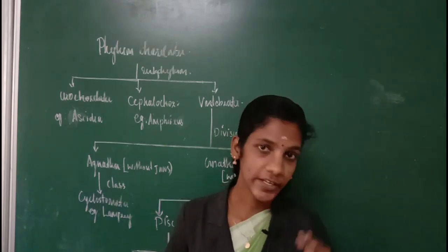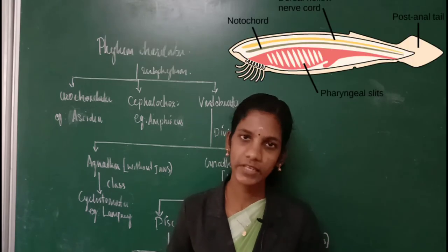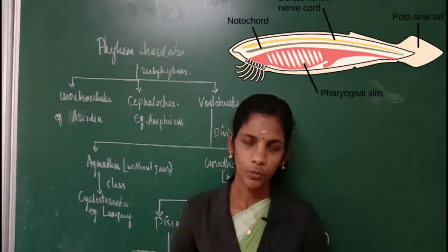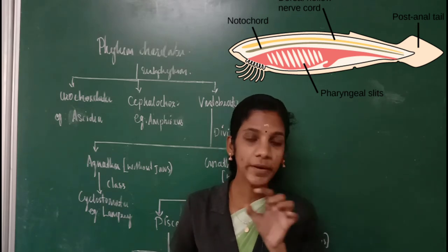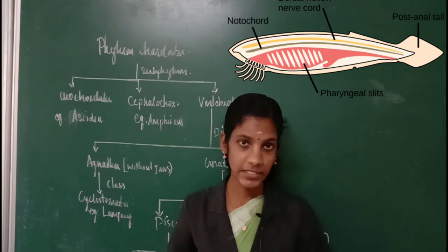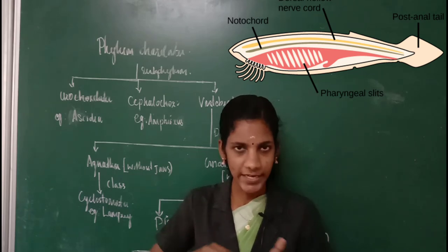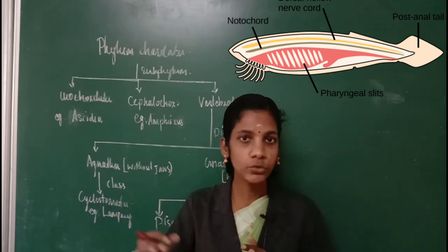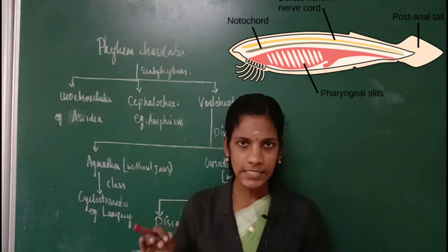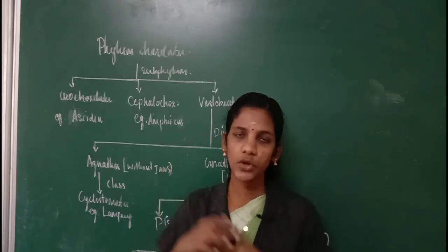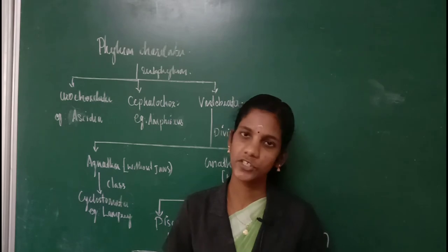Another important identifying feature of the phylum Chordata is the presence of gill slits. Gill slits are the lateral openings of the pharynx — the pharynx can open to the outside through these smaller openings called gill slits. Their function is to help in the respiration process.